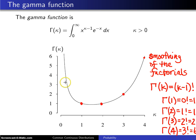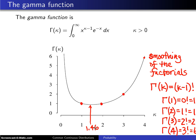So this gamma function you can think of as smoothing out the factorials. It handles things like 2.6 factorial, which now has some meaning in terms of the gamma function. One other thing: this gamma function hits a minimum here at 1.46, and on the next page there are a few facts concerning the gamma function.